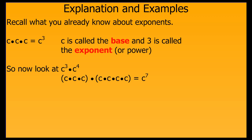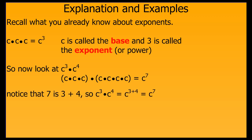So let's look at what happens when we multiply powers together. If we look at c to the third power times c to the fourth power, we notice that we end up with seven c's multiplied together, or c to the seventh power. We then notice that seven happens to be the sum of three and four, our original exponents.